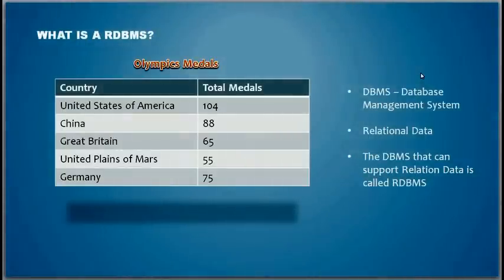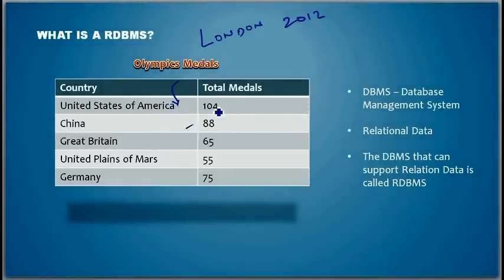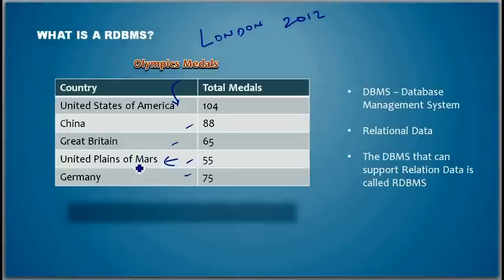Here is the London 2012 Olympics medal tally — just a snippet. Looking at it: United States of America won 104 total medals, China 88, Great Britain 65, and then... United Plains of Mars? There isn't a country like that. Does it belong to Mars? I can safely say that no Martians have ever won Olympics.